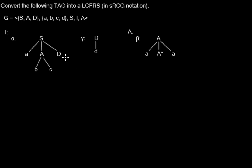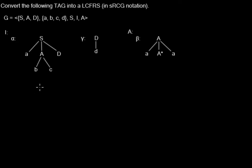Hello. I'd like to show you how to convert this tree adjoining grammar into an LCFRS in simple RCG notation that covers the same string language. That's an important point — we are not keeping the tree structure, we will only keep the same string language. I will only write down the production rules, because the other parts — the terminals, non-terminals, variables — you can easily figure out by yourself.